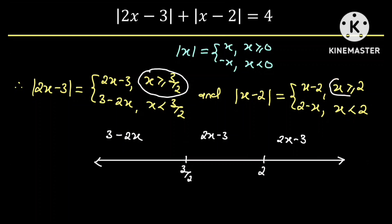Also, if x is greater than or equal to 2, then the absolute value of x minus 2 will just be equal to x minus 2. And if x is less than 2, then the absolute value of x minus 2 will be equal to 2 minus x.